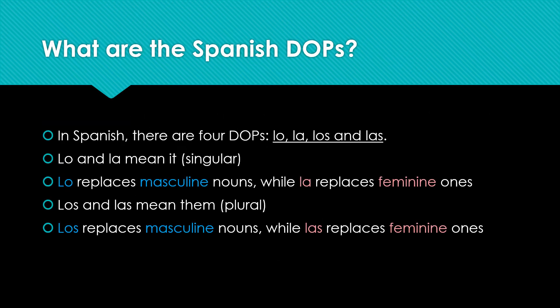In Spanish, there are four direct object pronouns: lo, la, los, and las. Lo and la mean it — they're singular. Lo replaces masculine nouns and la replaces feminine ones. Los and las mean them, the plural form. Los replaces masculine nouns while las replaces feminine ones.